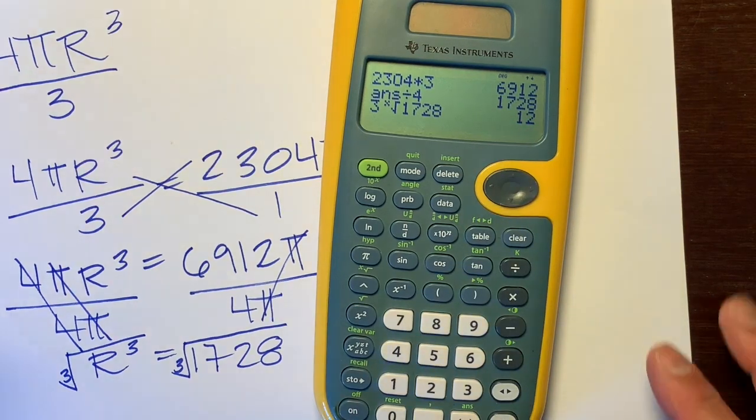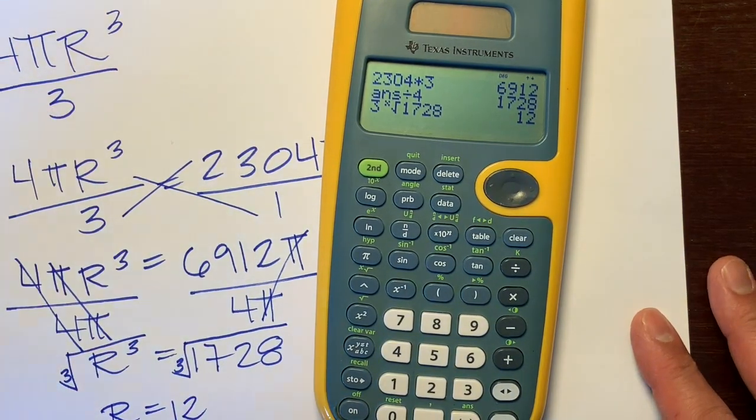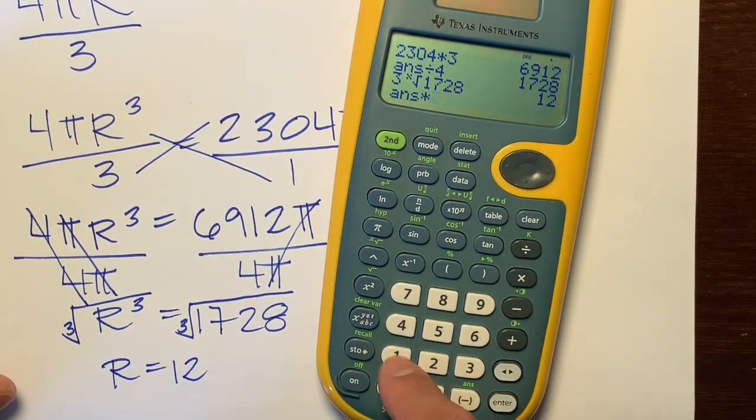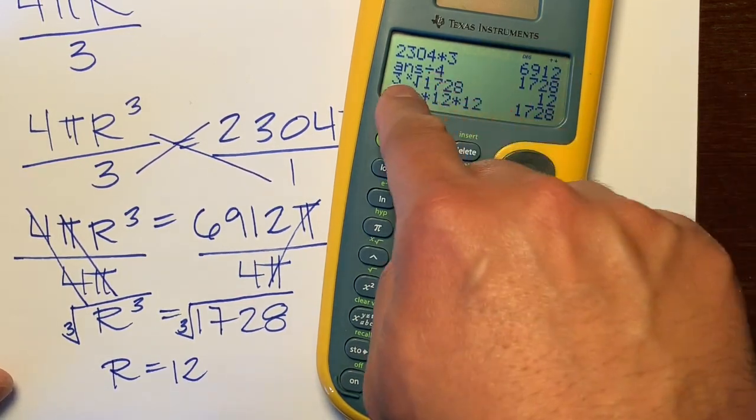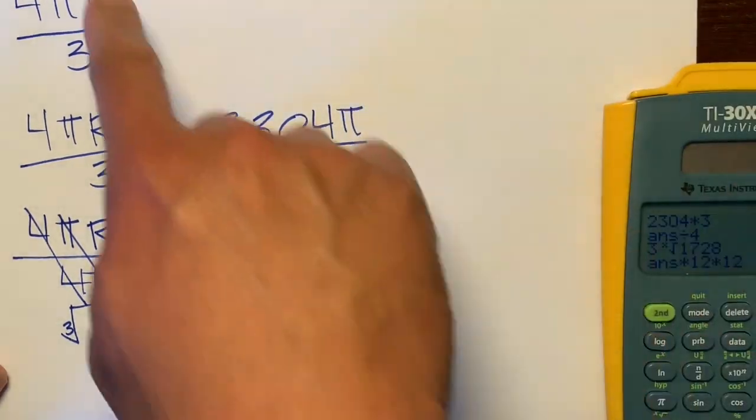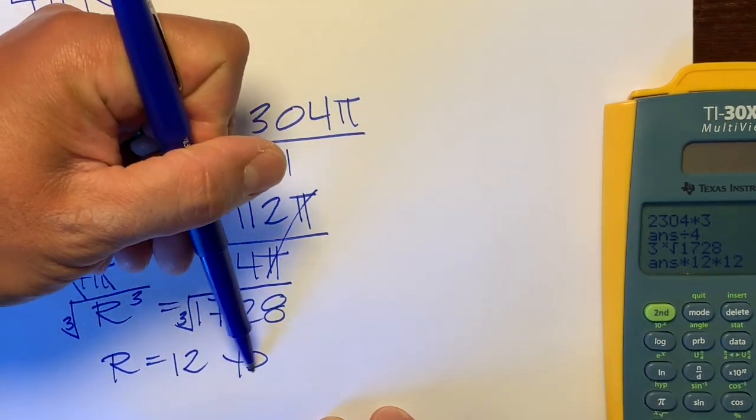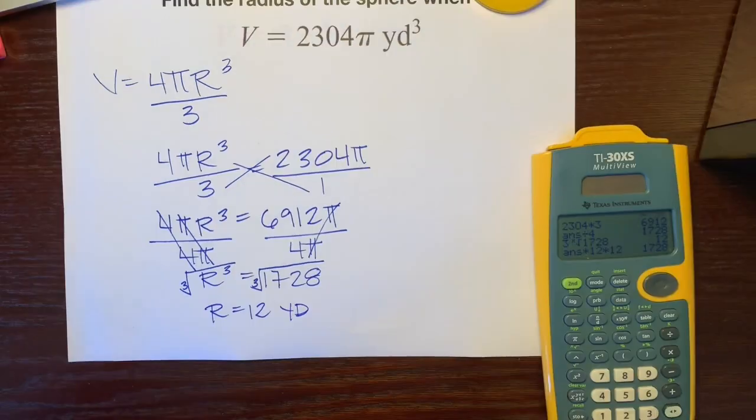And that gives us 12, so the radius equals 12. If you don't believe me, we could work backwards: 12 times 12 times 12 is 1,728. So that's how you get the cube root. There's your radius, 12 yards—just yards, not yards squared or cubed, just yards.